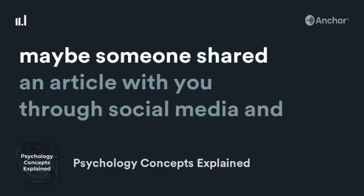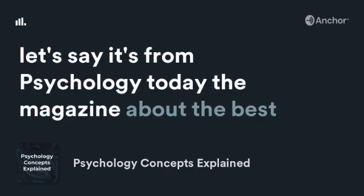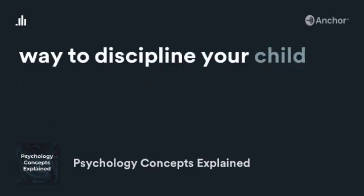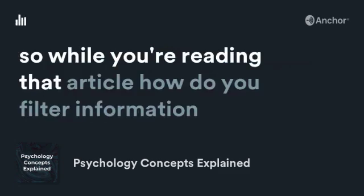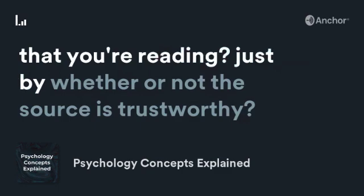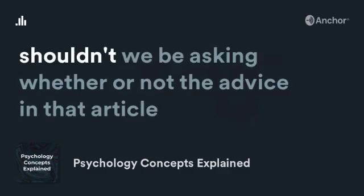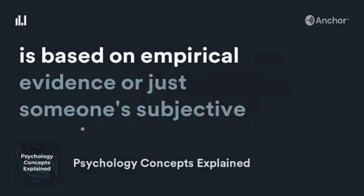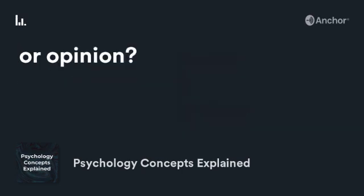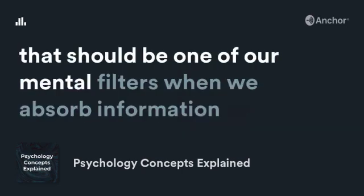So it's really important to distinguish the difference between subjective information versus objective information. Maybe someone shared an article with you through social media — let's say it's from Psychology Today — about the best way to discipline your child. How do you filter the information you're reading? Shouldn't we be asking whether or not the advice in that article is based on empirical evidence, or just someone's subjective experience or opinion? That should be one of our mental filters when we absorb information that matters to us.